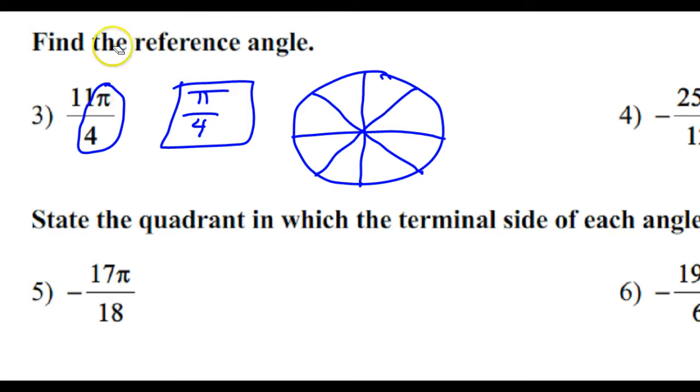I'm supposed to go 11π/4. So starting from here, that would be 1, 2, 3, 4, 5, 6, 7, 8, 9, 10, 11π/4 would be right here.